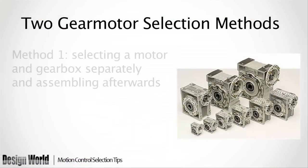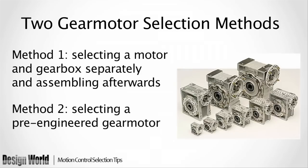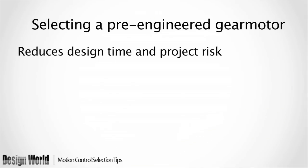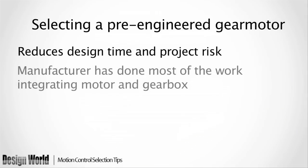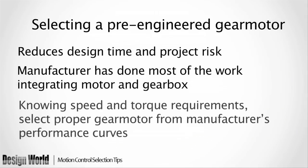There are really two methods for selecting a gear motor. Method one involves selecting a motor and gearbox separately and combining them afterwards. Method two, however, involves selecting a pre-engineered gear motor. While both methods are effective at finding the most compatible gear motor, method two reduces the design time and project risk.